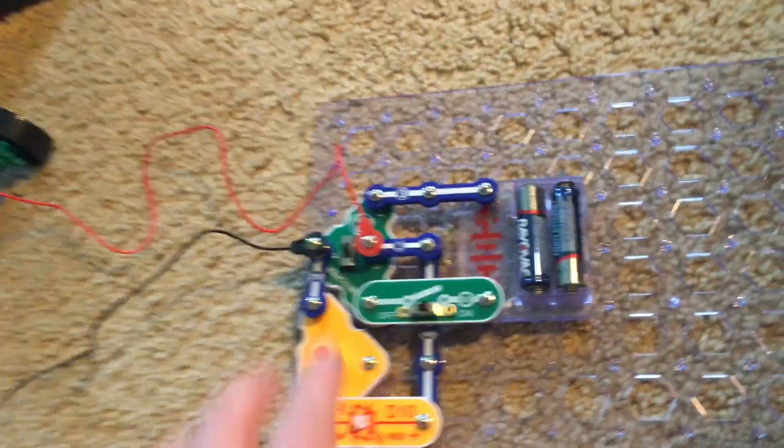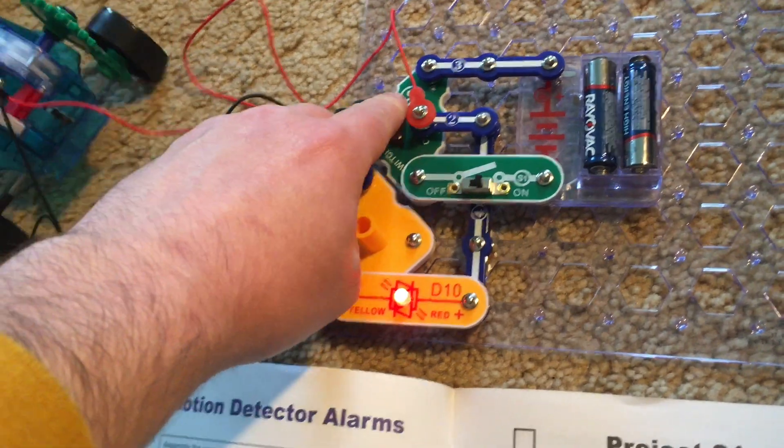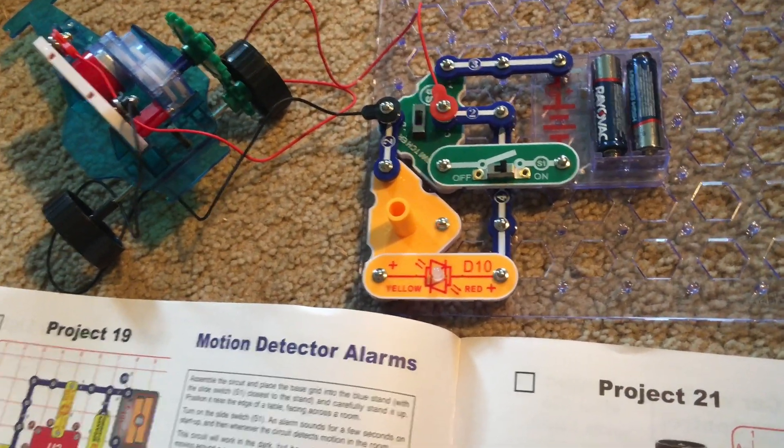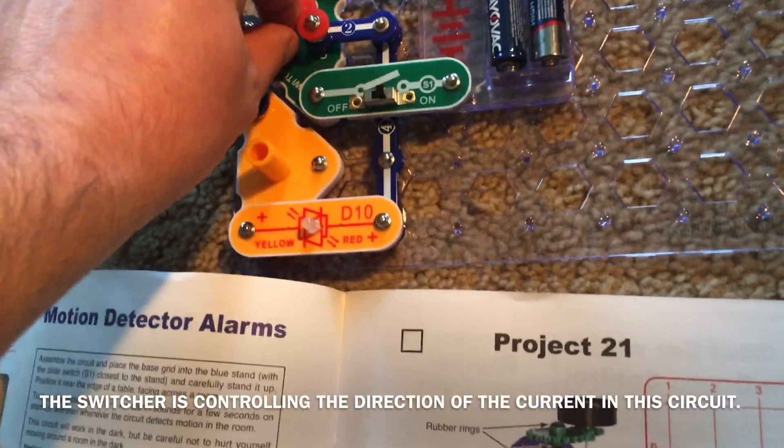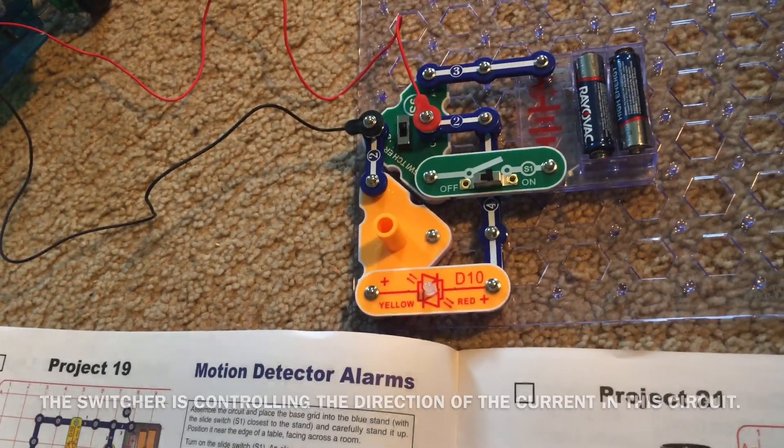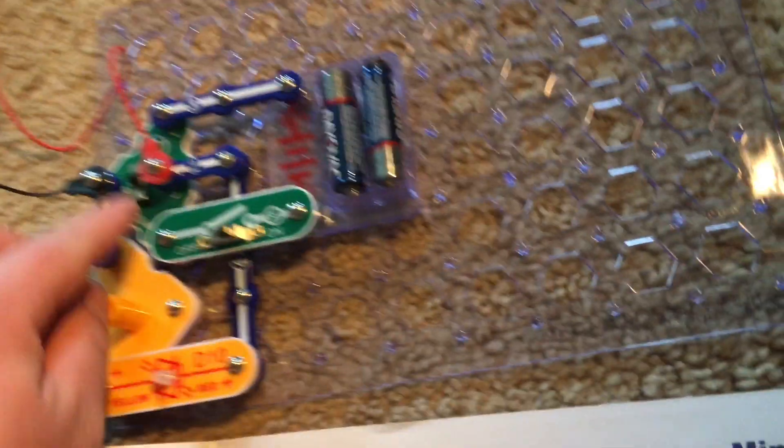However, when I make it move backwards, the control light is red. So, the control light is yellow to indicate that the car is moving forward and when it is red, it means that the car is moving backwards.